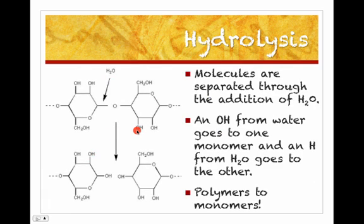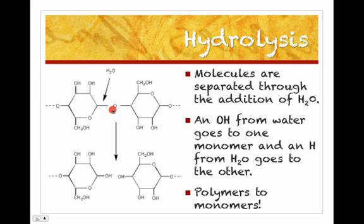This is a picture of hydrolysis. Again, you have to put water back in. Notice this is a bond between these two monomers. So this bond is then broken, and we can put the OH back in and the hydrogen back in. Now we've got the two monomers — that's hydrolysis.